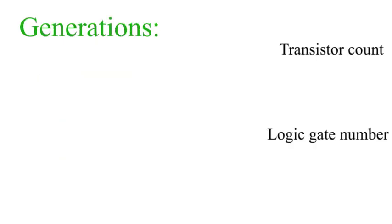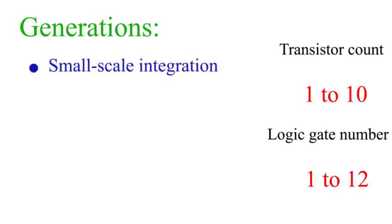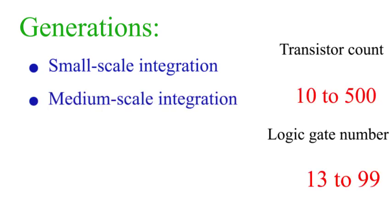Generations of ICs depend upon the transistor count and logic gate number used in an IC. There are different generations. Small scale integration IC has transistor count 1 to 10 and logic gate numbers 1 to 12. Medium scale integrated ICs have transistor count 10 to 500 and logic gate number 13 to 99.